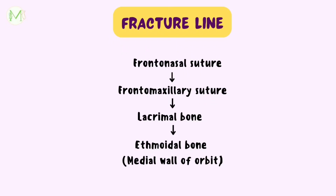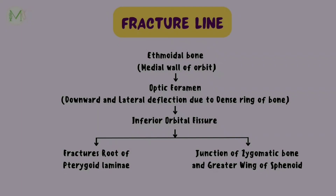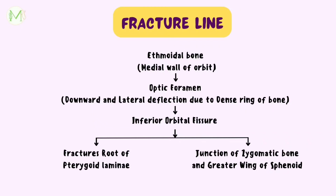The fracture line commences near the frontonasal and frontomaxillary suture and traverses the upper limit of the lacrimal bone. It continues posteriorly, crossing the thin orbital plate of the ethmoid bone constituting part of the medial wall of the orbit. As the optic foramen is surrounded by a dense ring of bone, the fracture line gets deflected downwards and laterally to reach the medial aspect of the posterior limit of the inferior orbital fissure.